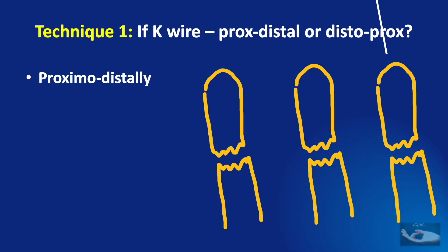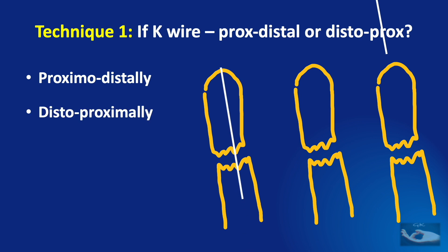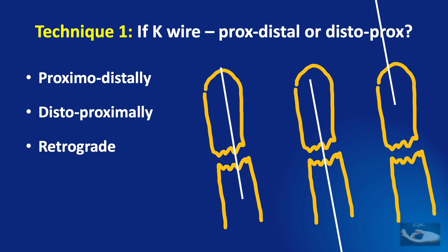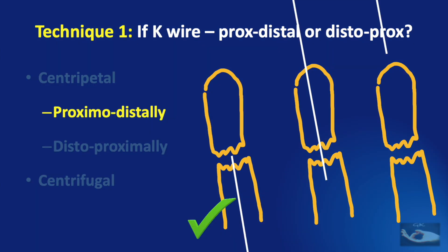Generally, K-wires can be passed proximo-distally, passing the wire proximally through the fracture site into the distal segment; or disto-proximally, passing the wire first into the distal segment and then into the proximal segment; or retrograde, from the head of the metacarpal. Among these, passing the K-wire proximo-distally is ideal because it causes the least damage to the metacarpophalangeal joint, which is very important.